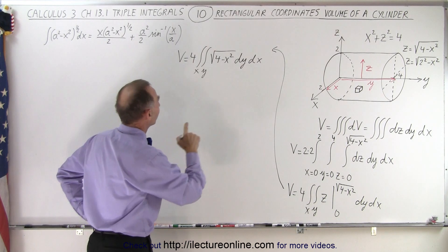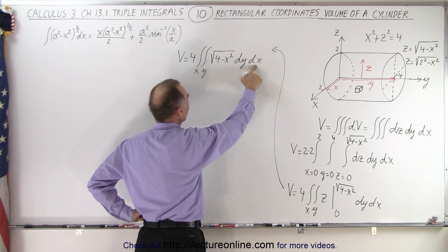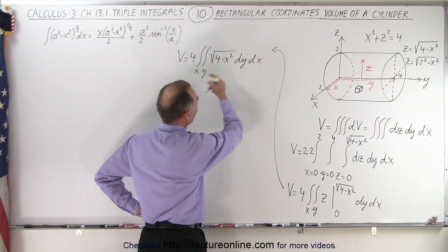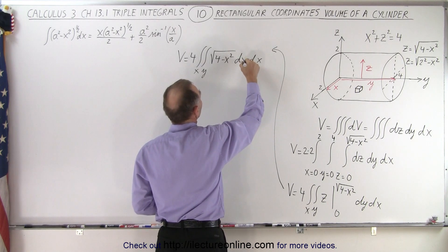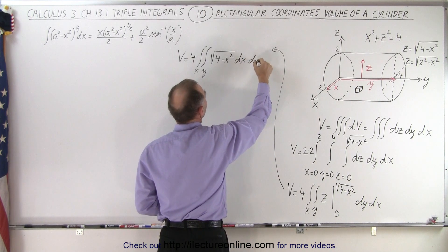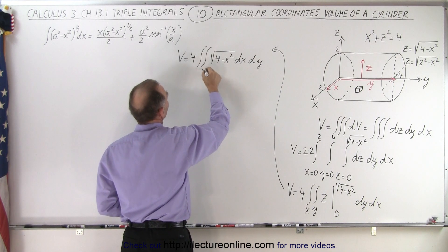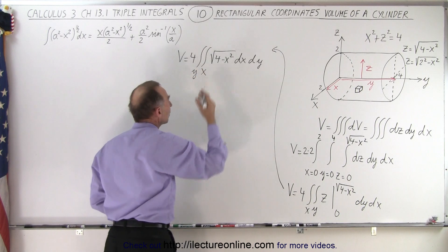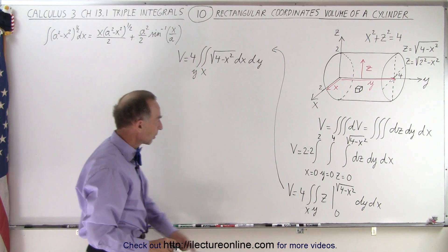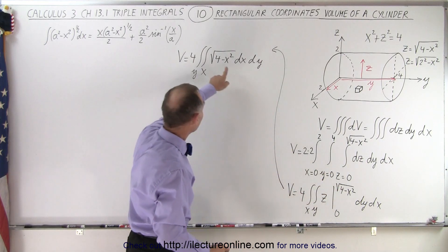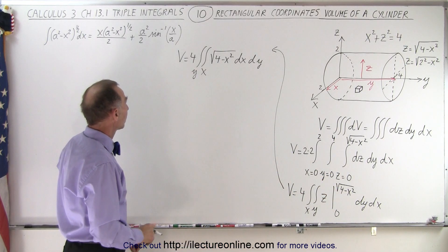Since we have x in the integrand, it makes sense to integrate over x first before integrating over y. So I'm going to reverse the order of the two remaining integrals — integrate over x first, then y. That's typically why you decide the order: because you have the variable x after plugging in the limit.